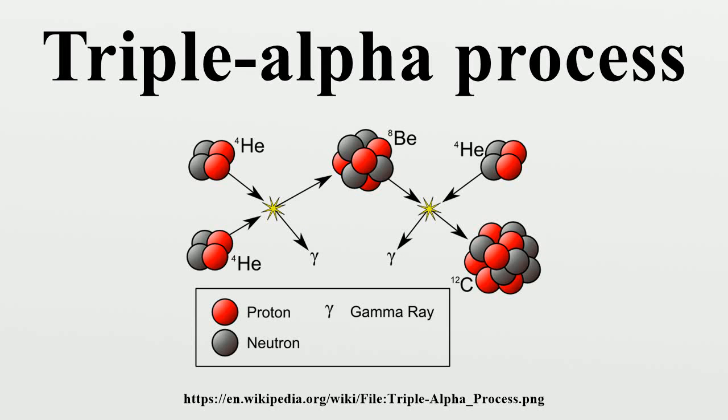The triple alpha process is a set of nuclear fusion reactions by which three helium-4 nuclei are transformed into carbon.